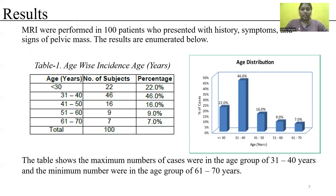Results by age group: patients below 30 years were 22 subjects (22%); 31 to 40 years were 46 subjects (46%); 41 to 50 years were 16 subjects (16%); 51 to 60 years were 9 subjects (9%); 61 to 70 years were 7 subjects (7%). The maximum number of cases were in the age group of 31 to 40 years, and the minimum were in the age group of 61 to 70 years.